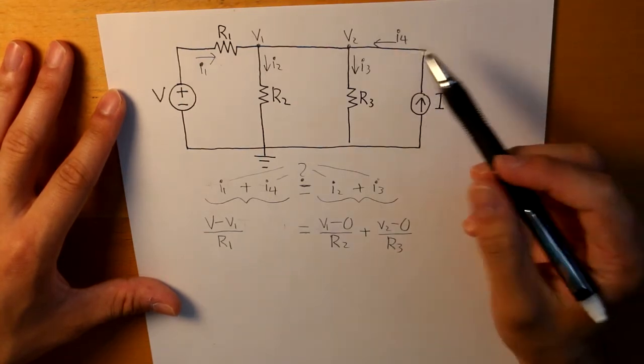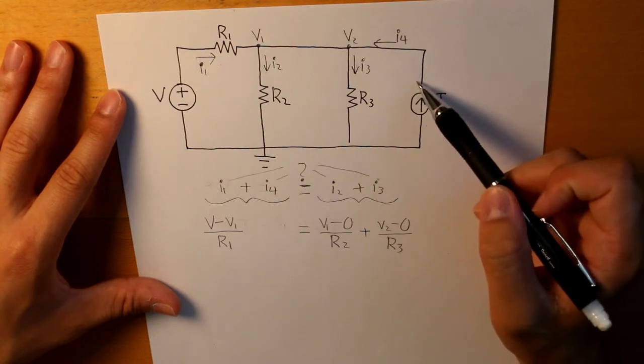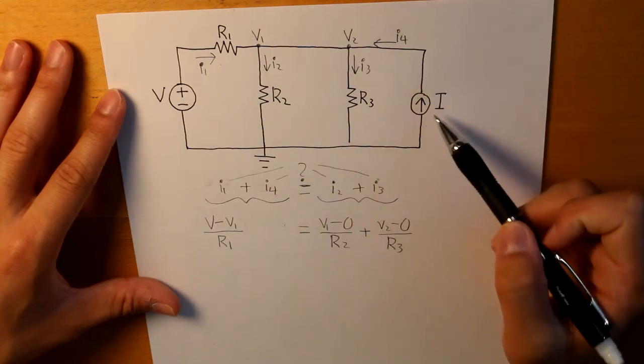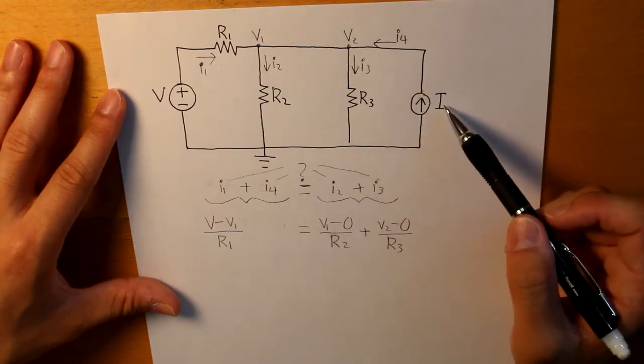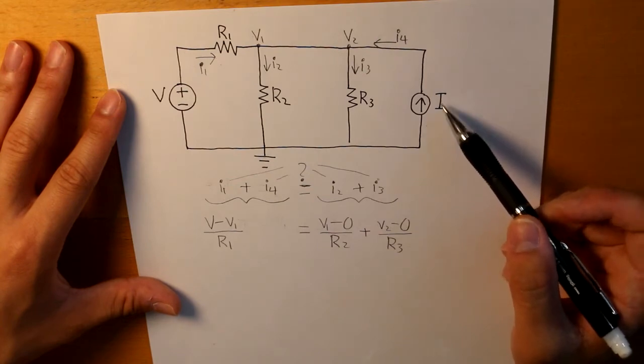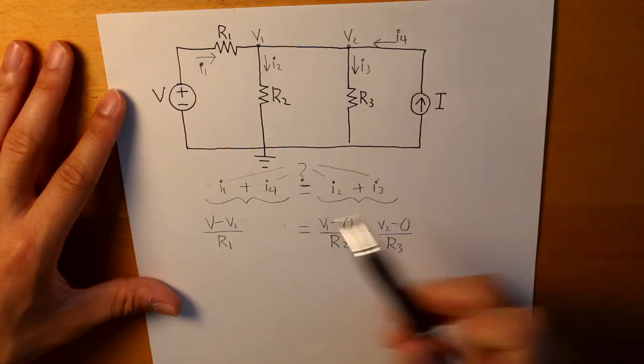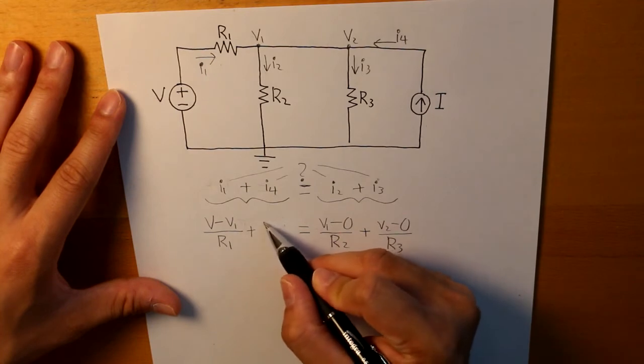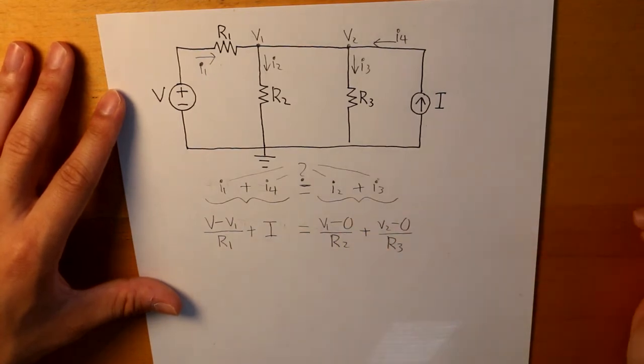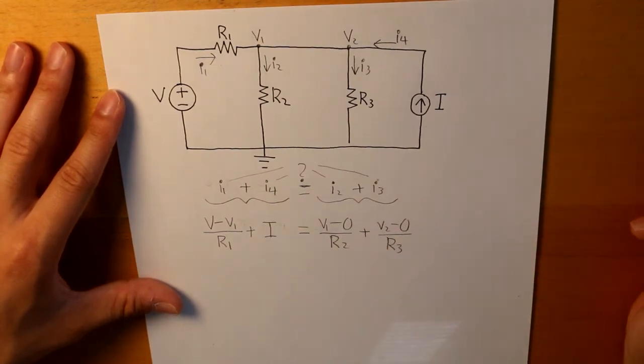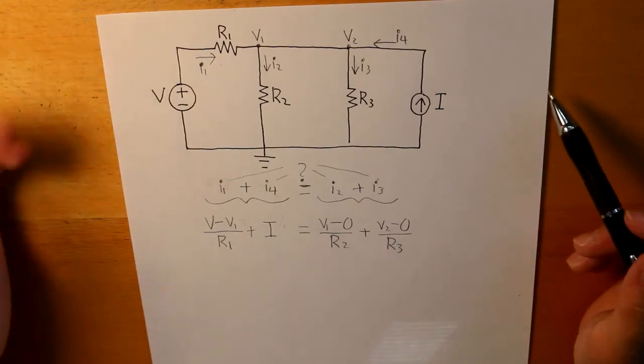And I4, well, it doesn't have a resistor, but it has a current source. And that current source value, which is I, is directly proportional to what I4 is. So that would essentially be just I. And that is our KCL equation using nodal analysis.